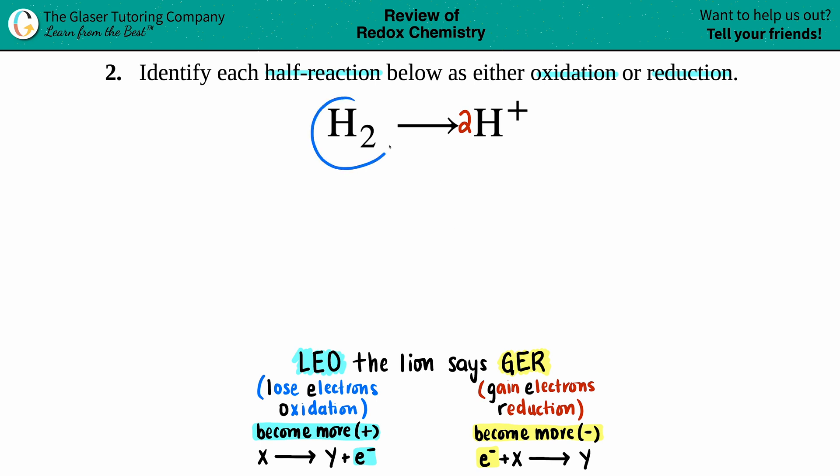Just know that any time you have diatomics - so H₂, N₂, O₂, F₂, any diatomic - that element, in this case hydrogen, will always have a zero charge because there's no charge in the upper right hand corner. That's zero, and two times what charge gets you to zero as a total charge is zero.